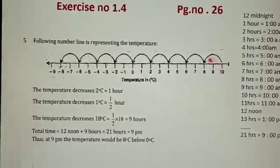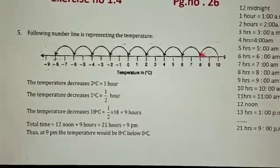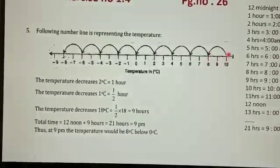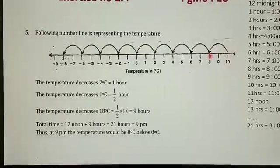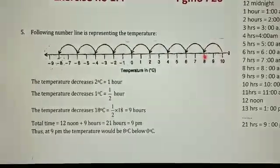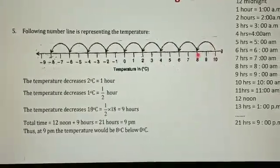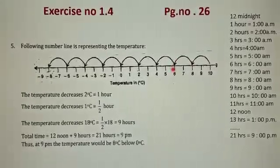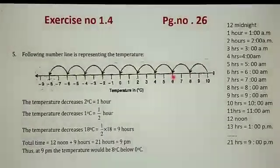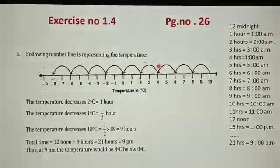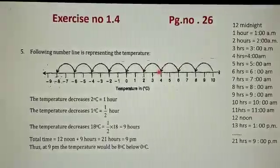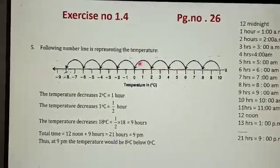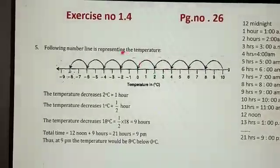In 1 hour the temperature is reduced by 2 degrees Celsius. So in 1 hour the temperature will be 8 degrees Celsius. Again in 1 hour the temperature will be 6 degrees Celsius. Again in 1 hour the temperature will be 4 degrees Celsius. Like this, the reduction in temperature goes on till midnight.